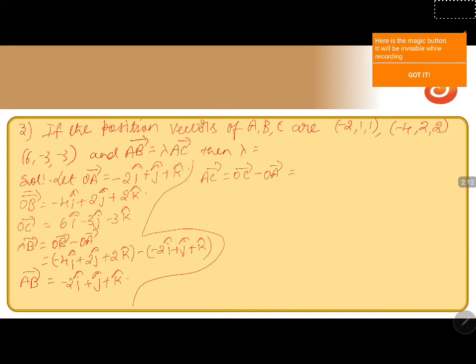Now we calculate AC vector. AC vector equals OC vector minus OA vector. OC vector is 6 i-cap minus 3 j-cap minus 3 k-cap, minus OA vector which is minus 2 i-cap plus j-cap plus k-cap. Therefore, AC vector equals 8 i-cap minus 4 j-cap minus 4 k-cap.